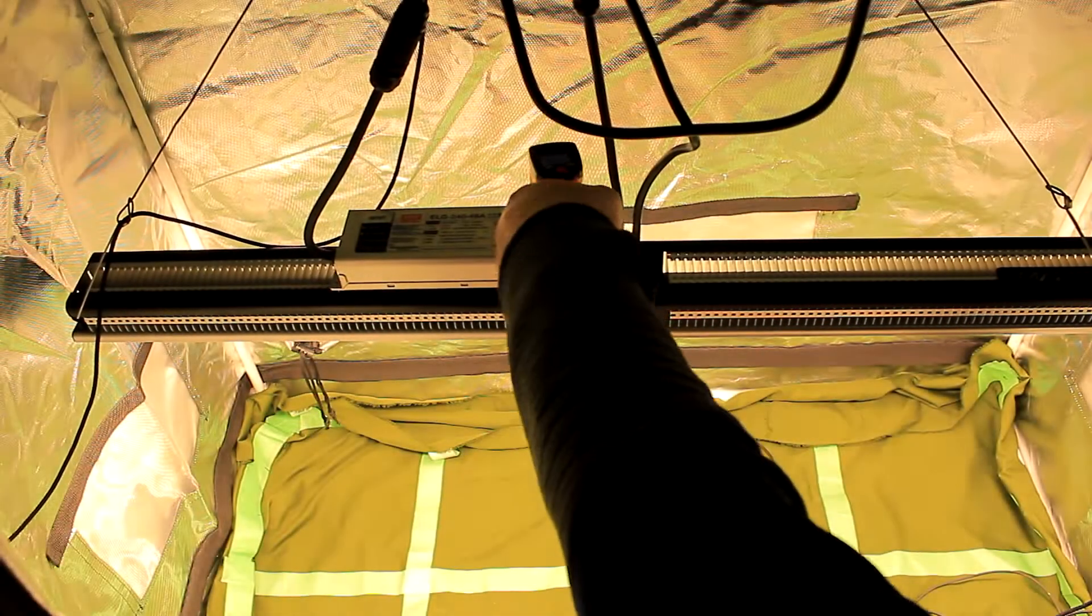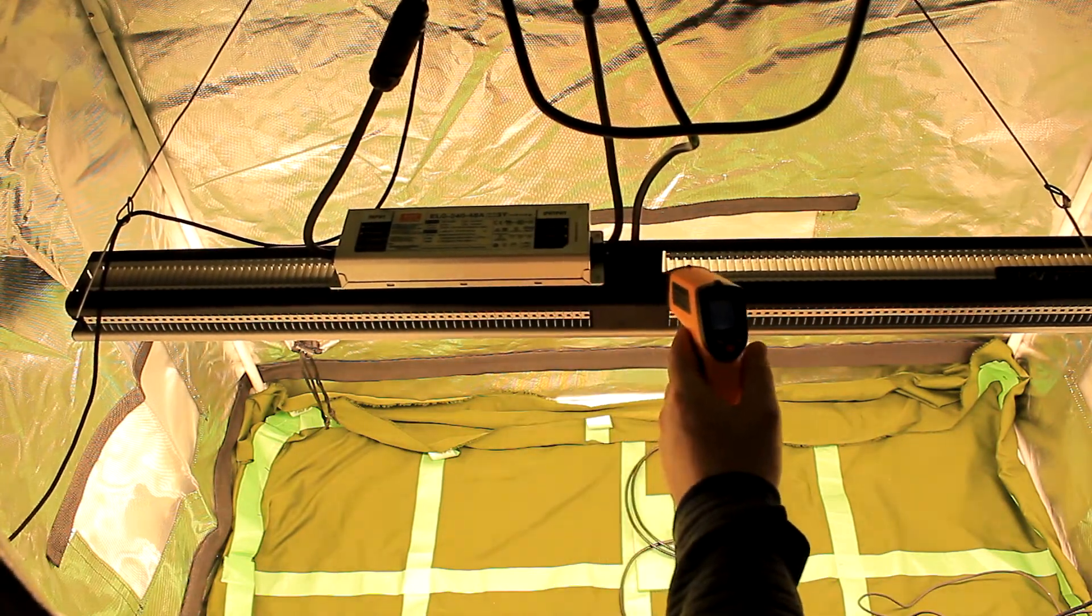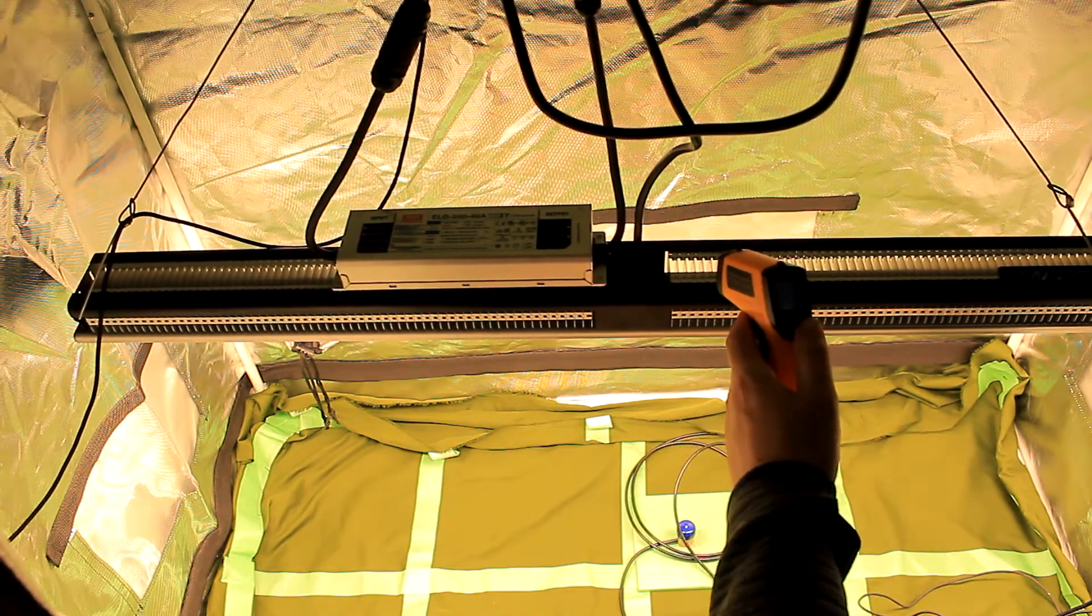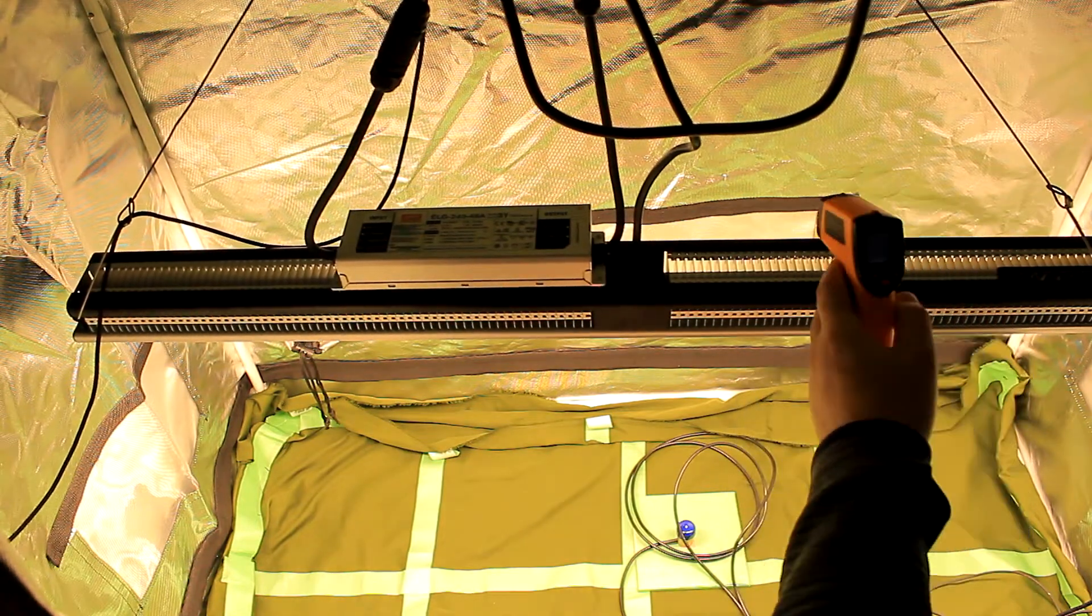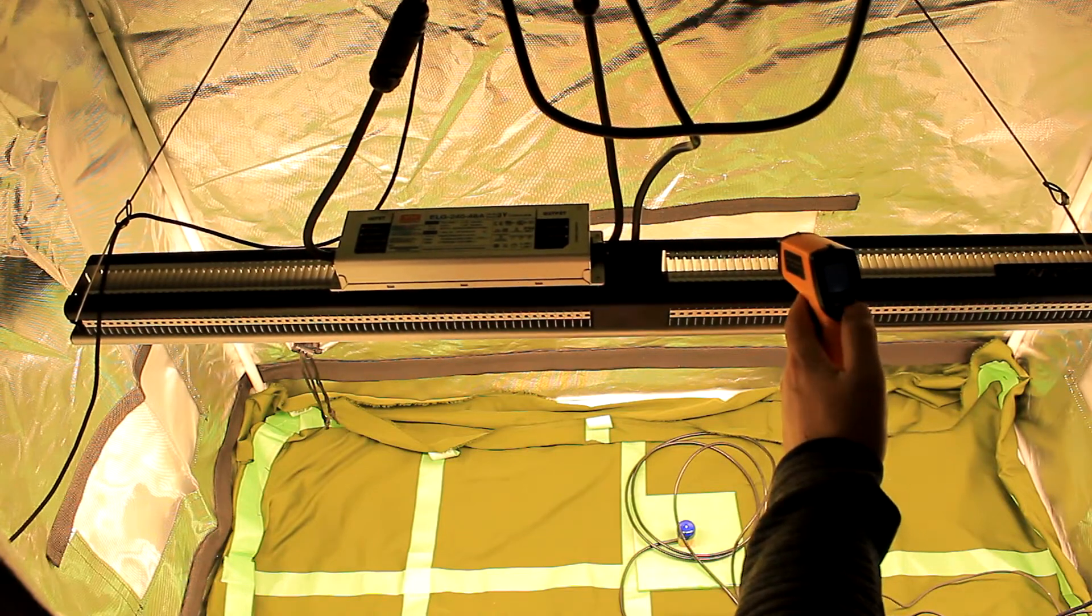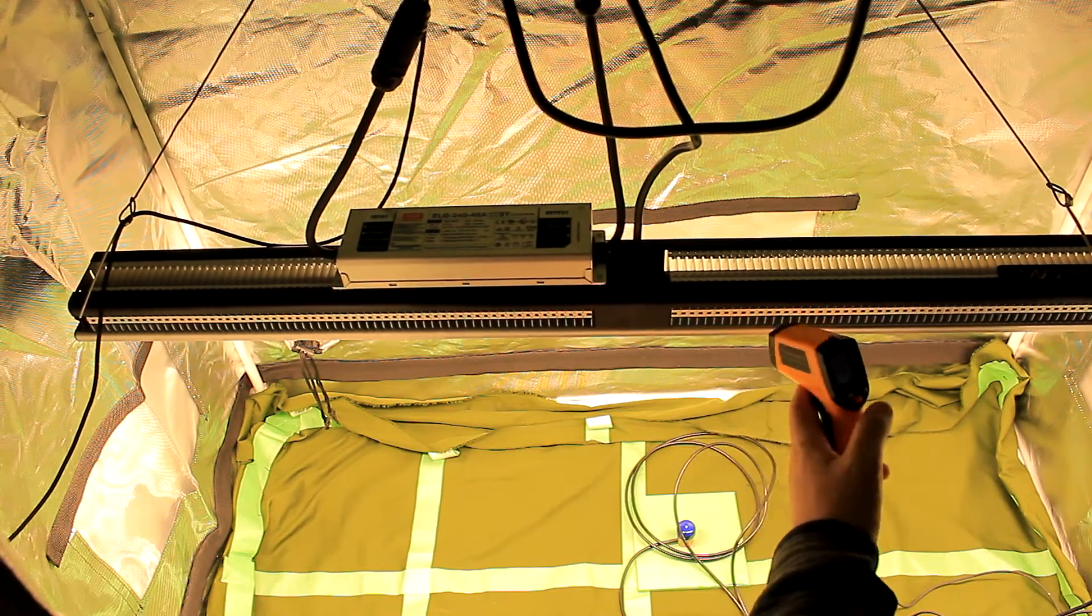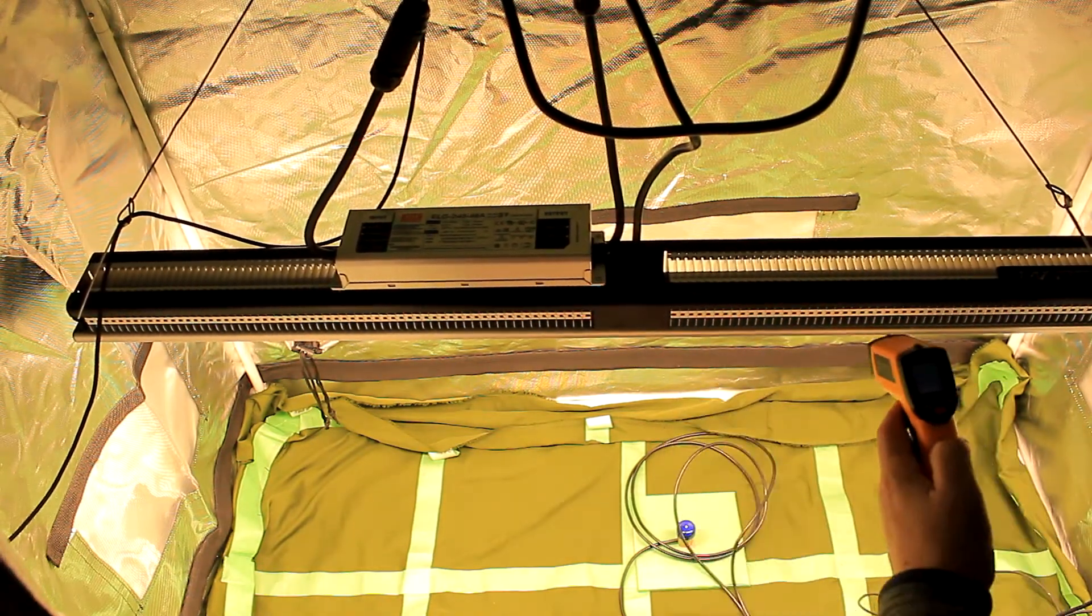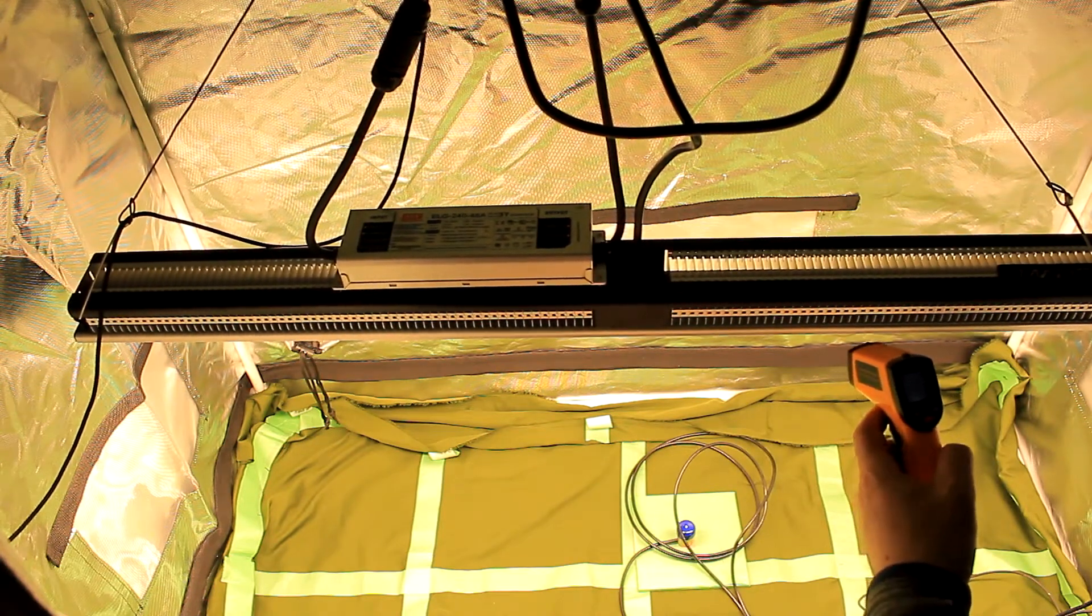All right, so I'm going to start over here. We're going to take a reading off the top of the driver. We look to be at 53 degrees Celsius, 53.5, 129 degrees Fahrenheit. So if we hit just the top of the plate here, it looks like we're at 43 degrees Celsius and 110 degrees Fahrenheit. We're going to get another reading here on the bottom of the board: 53 degrees Celsius and 125 degrees Fahrenheit.